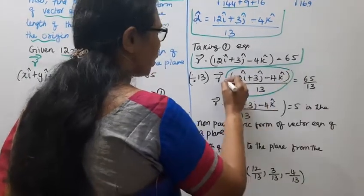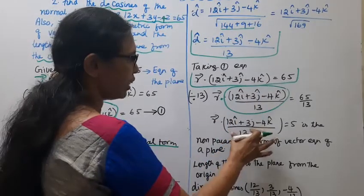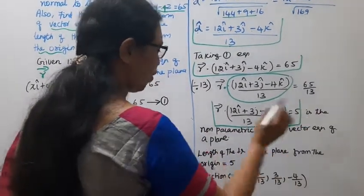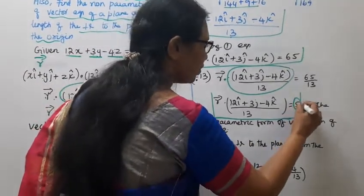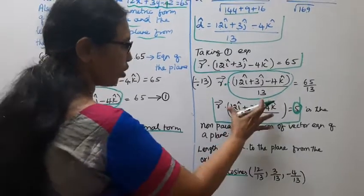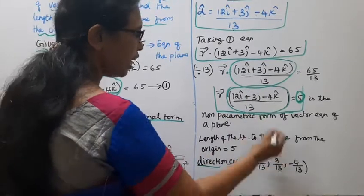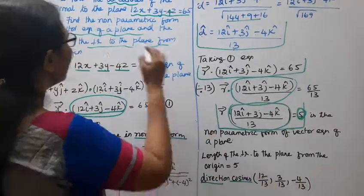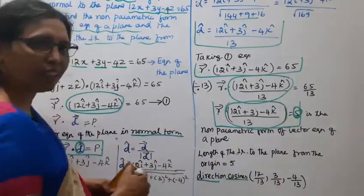Now the non-parametric form of the vector equation gives r vector dot d cap equal to P, which is r vector dot d cap equal to 65 by 13. The length of perpendicular to the plane from the origin is 5. The direction cosines are 12 by 13, 3 by 13, and minus 4 by 13. This is the length of the perpendicular to the plane from the origin.